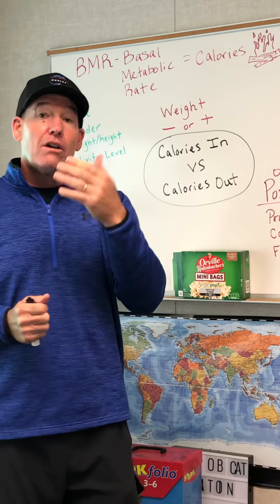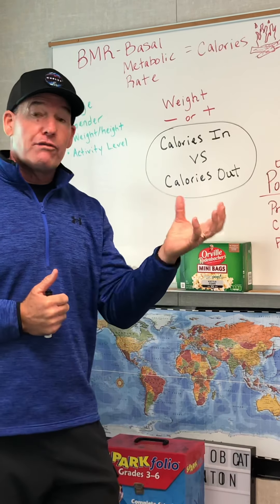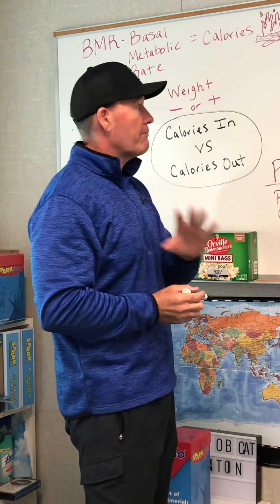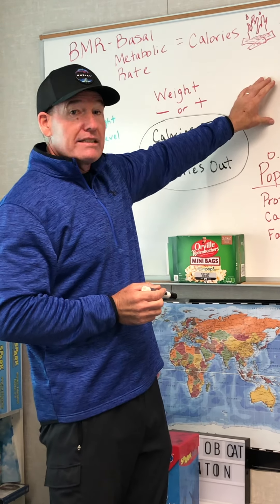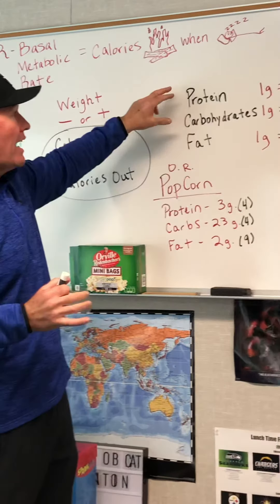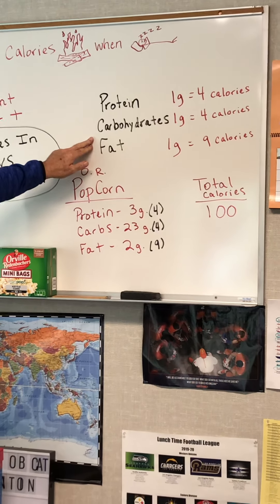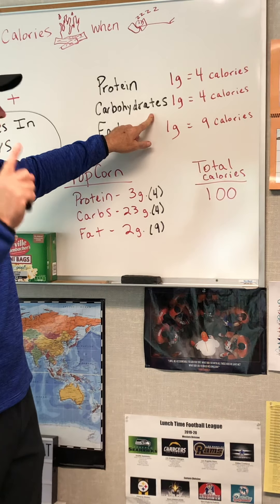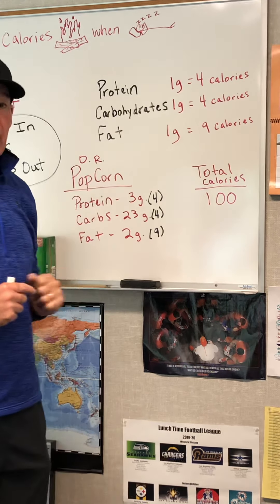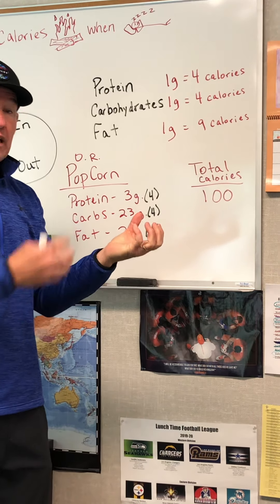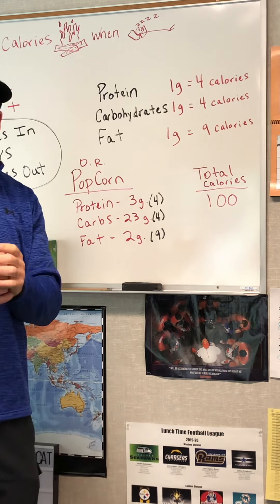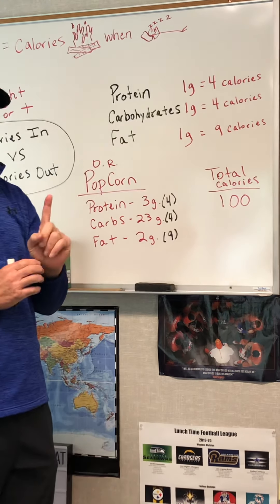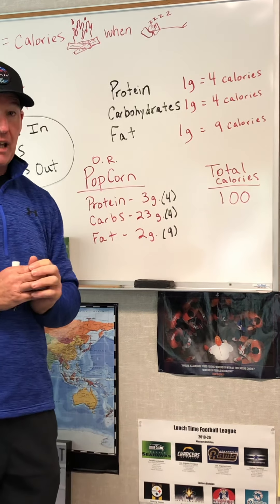Now, which foods have more calories and which have less? Foods contain macronutrients such as proteins, carbohydrates, and fats. Simply put, both protein and carbohydrates have four calories per gram. So if you have a gram of protein and a gram of carbohydrates, each of them has four calories. Fat, however, has nine calories per gram.